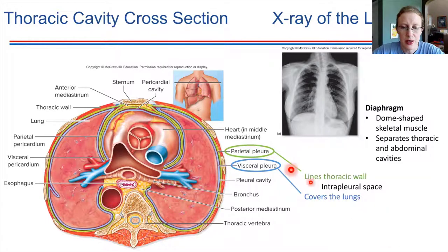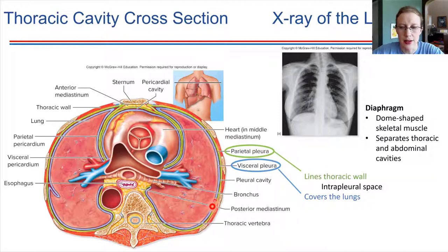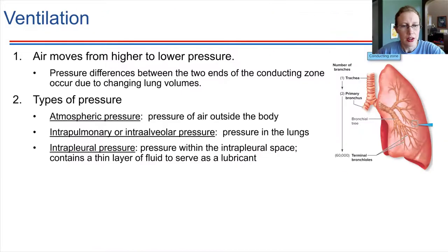So just take note: the parietal pleura lines the whole thoracic cavity, and the visceral pleura lines the lungs. Hold that thought and let's move on.